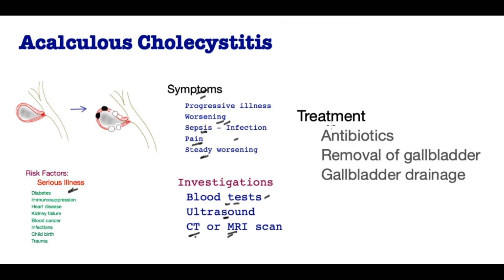Once diagnosed, patients are treated aggressively with antibiotics, though antibiotics alone are not enough for the great majority. Those well enough should undergo a laparoscopic cholecystectomy — a keyhole operation for removal of the gallbladder. Those not well enough for surgery should undergo a gallbladder drainage procedure, where ultrasound guidance is used to insert a tube inside the gallbladder to drain all the pus. Patients usually improve within 24 hours, and the tube is maintained as long as needed.